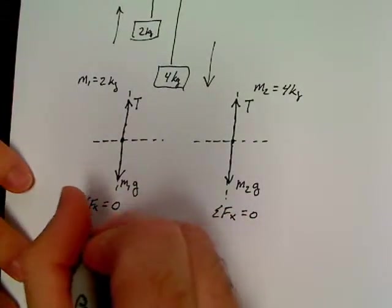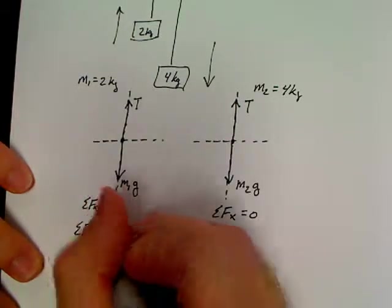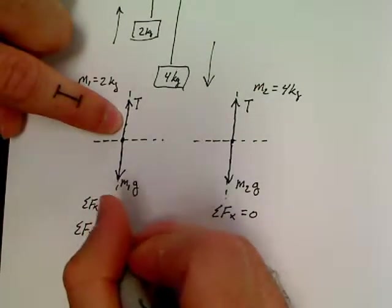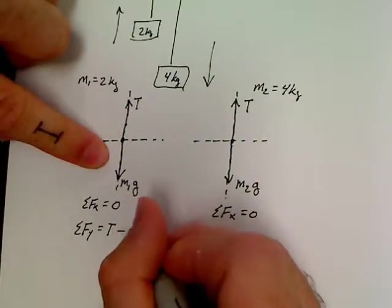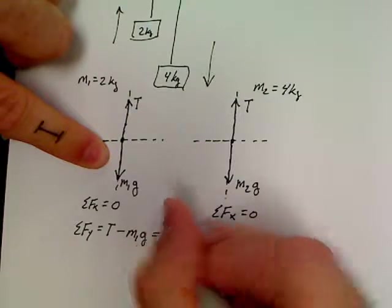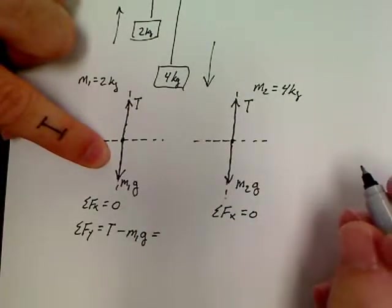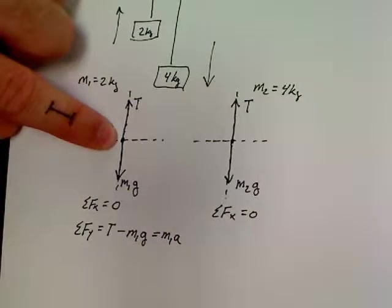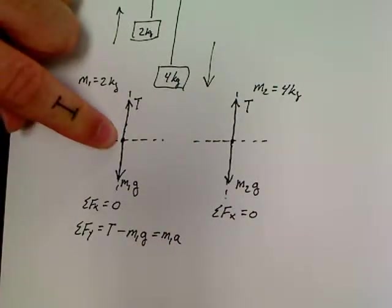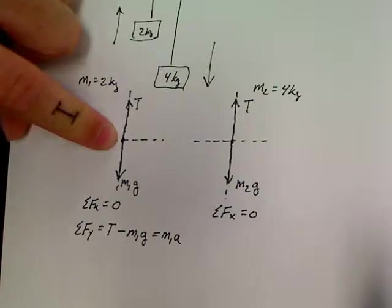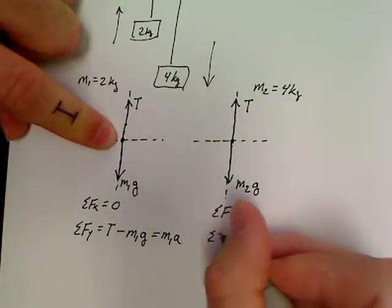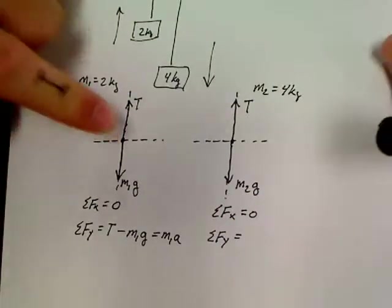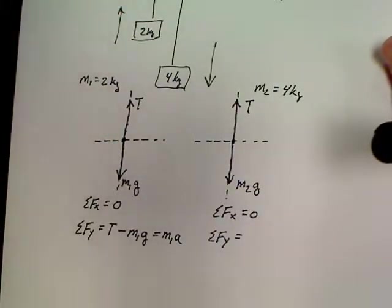Now the beauty about the Atwood's machine question is this: sum of the forces X on both of these objects is a big zero. Sum of the forces Y is equal to, in the case of this one, I'm going to write T minus M1g equals, now this is where some people will mess up. You've got to write M1a for this object. Now here's where I'm about to teach this one differently.